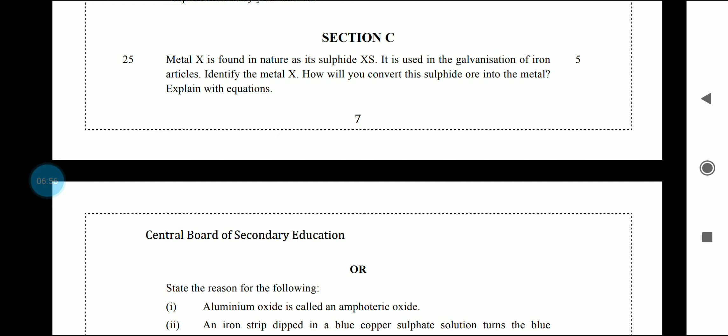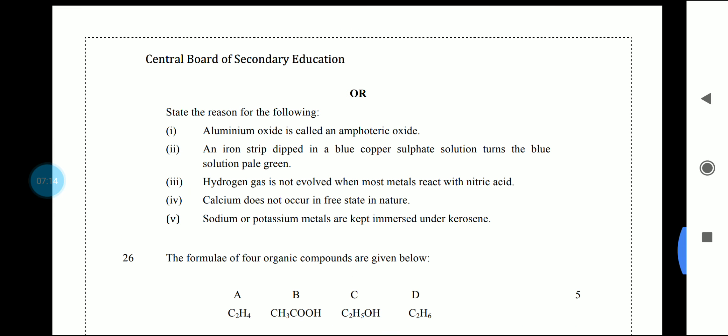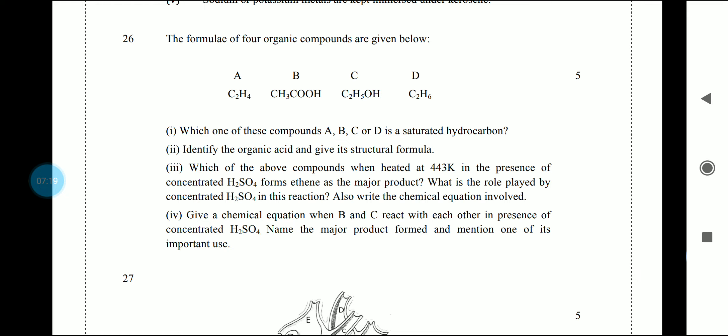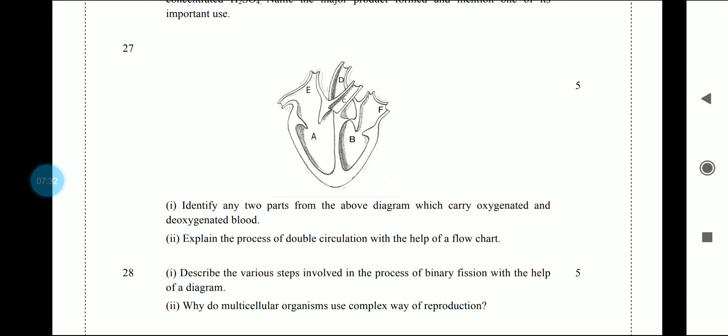5 marks section has been left. Question 25 is in chemistry. If you have clear concepts, the answer is easy. Very difficult questions require reasoning, so you need to be clear. Question 26 in chemistry has taken A, B, C, D and all questions. Question 27 is a diagram that has been labeled, and we have been asked questions. The second part is the process of double circulation as a flow chart. You should also prepare flow charts for human brain. You can write theory or directly draw the flow chart.